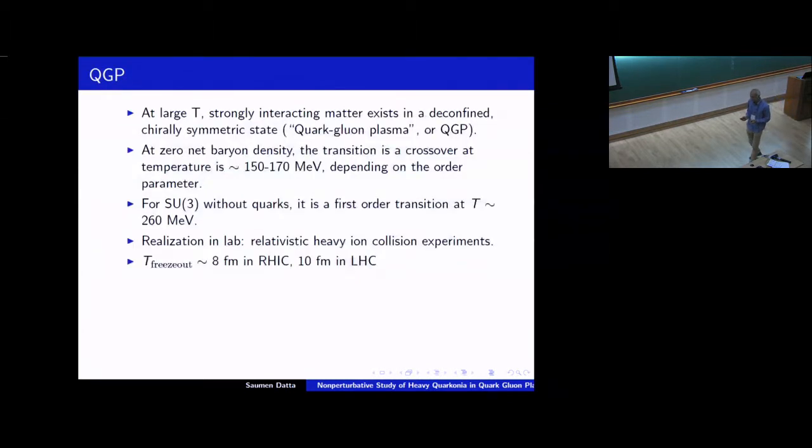So just to do a bit of orientation, because as I said, the topic is a little outside the main chain of talks so far. As you know, at large temperatures, strongly interacting matter exists in a deconfined chiral asymmetric state which we call the quark-gluon plasma. At zero net baryon density, this transition to this phase happens at a temperature of about 150 to 170 MeV. For the pure gauge theory without quarks, one has a first-order transition at about 260 MeV.